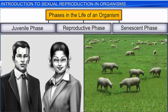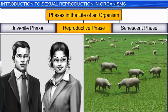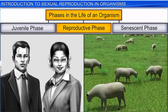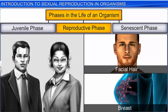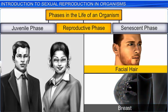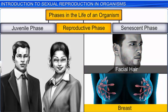Just as plants develop specialized structures during the reproductive phase, animals too show certain morphological and physiological changes. In human beings, the reproductive phase, which starts with puberty, leads to the development of male and female secondary sexual characters, such as facial hair in males and breasts, which are seen more prominently in females.